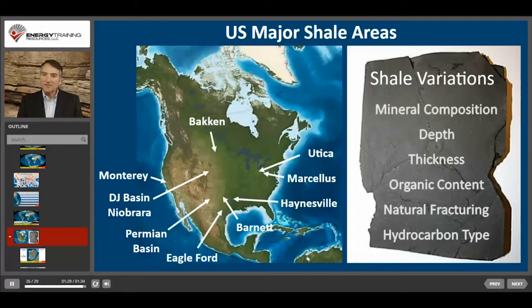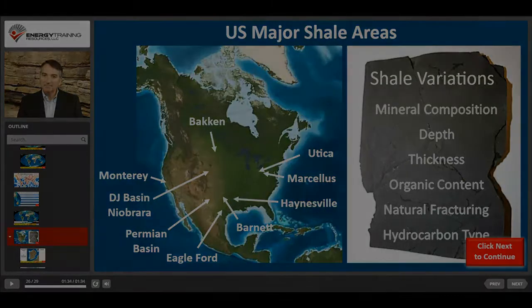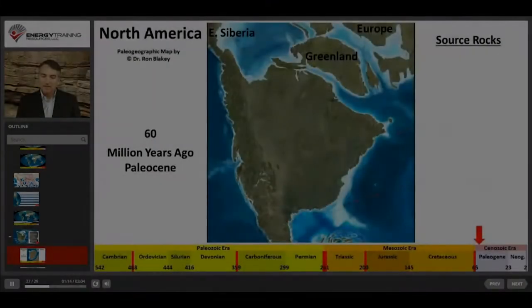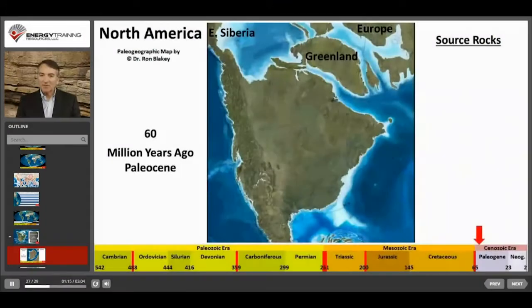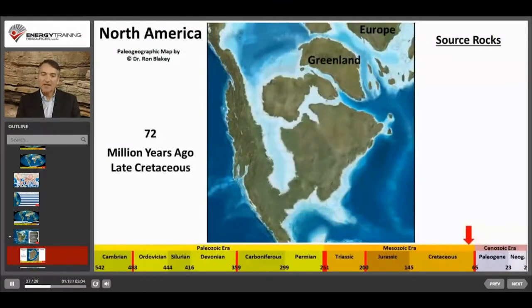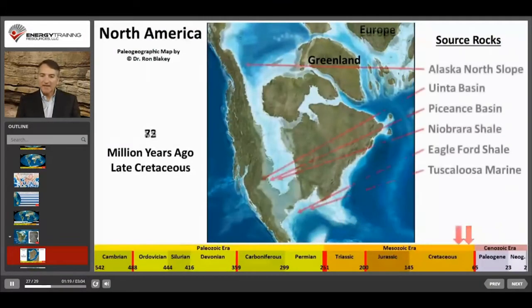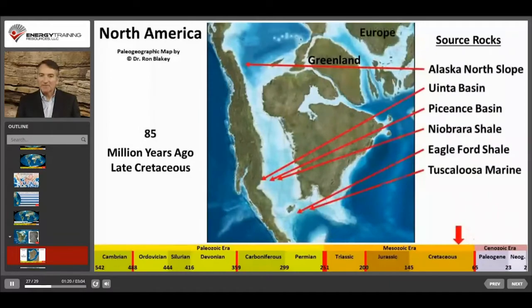The trend to drill into these shale layers directly to produce oil and gas is called unconventional development. The Cretaceous period was ideal for marine life and at that time sea levels were high and the Rocky Mountains had not yet been uplifted.